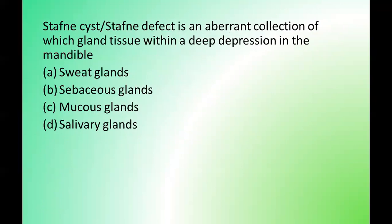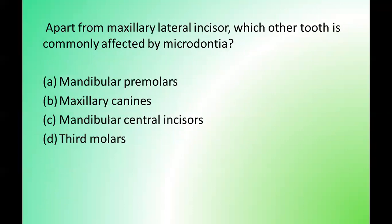Next question: Staphne cyst or Staphne defect is an aberrant collection of which gland tissue within a deep depression in the mandible? Options are: thyroid gland, sebaceous glands, mucous glands, salivary glands. The correct answer is option D — salivary glands. Next question: apart from the maxillary lateral incisor, which tooth is most commonly affected by microdontia? Options are: mandibular premolar, maxillary canine, mandibular central incisor, third molars. The correct answer is option D — third molars.